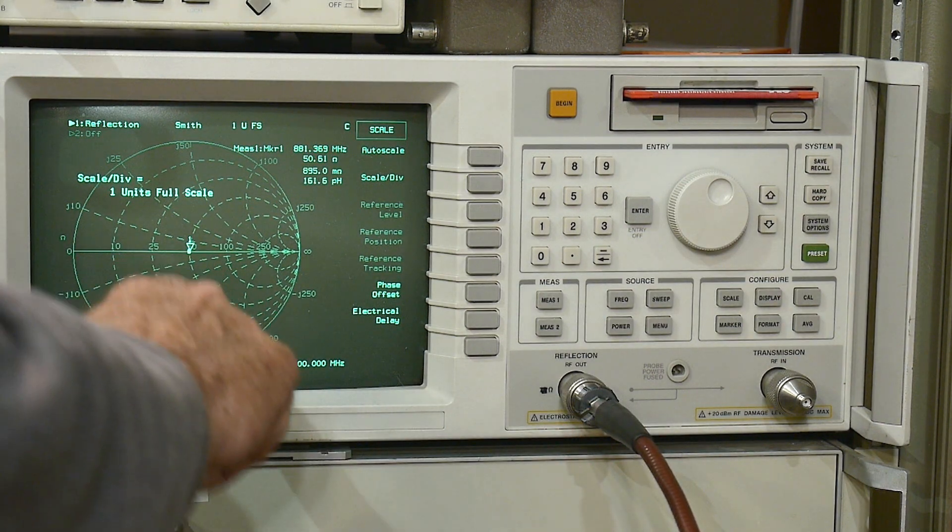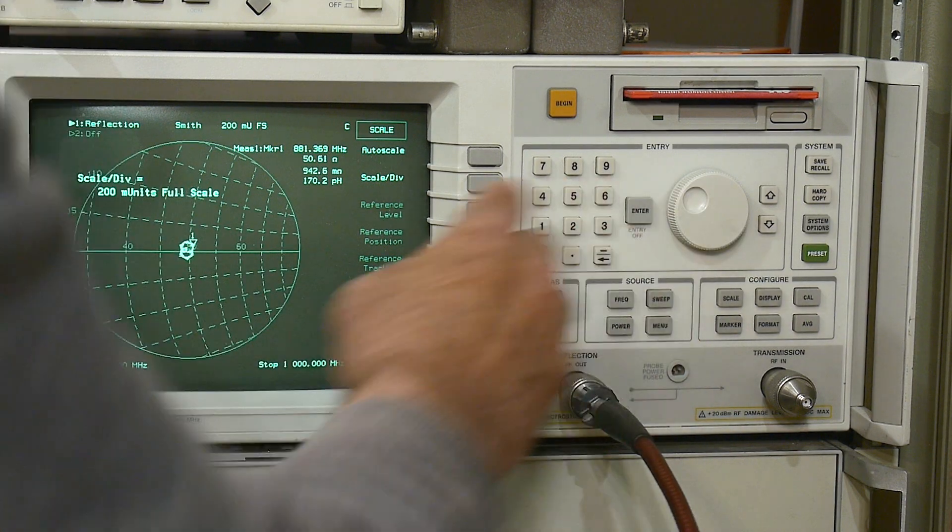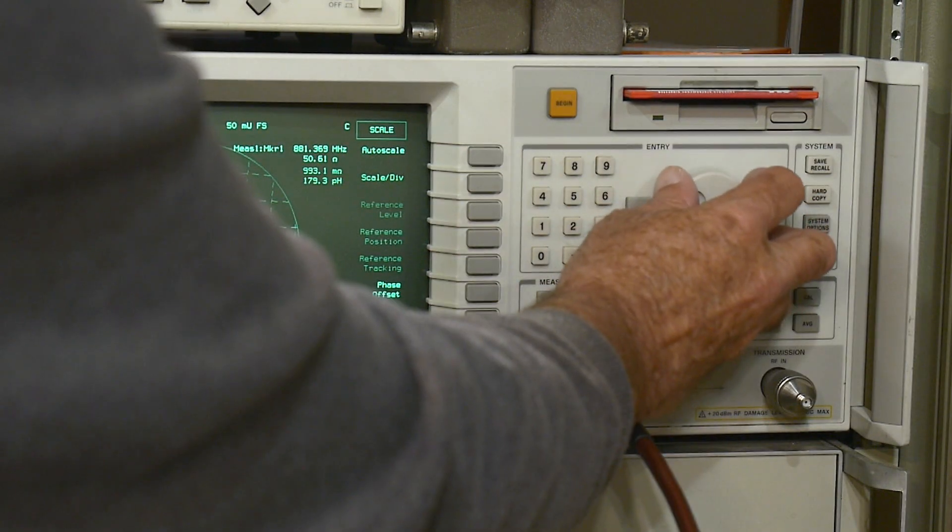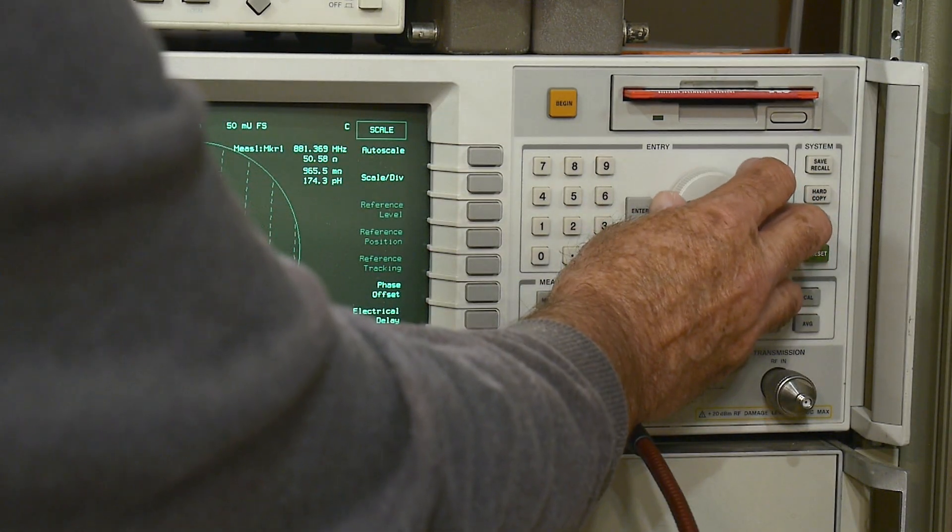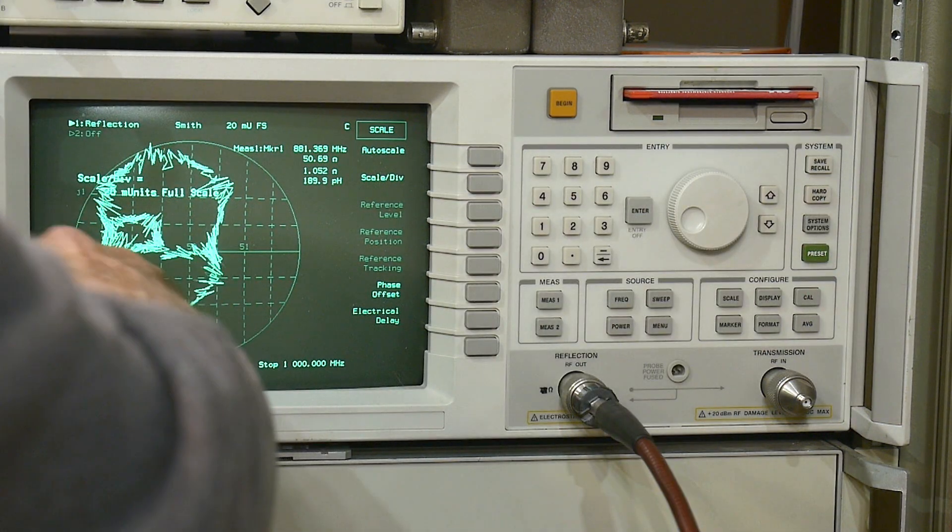You see all we're getting is one little spot down there. Now we can zoom in and see how bad we are. We're kind of going around maybe half of an ohm, something like that. It's very close.